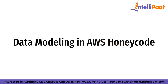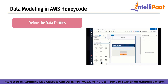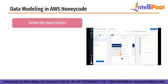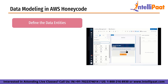Now we look at data modeling in AWS Honeycode. Data modeling is a critical aspect of building an application in Honeycode. A data model is a visual representation of how data is organized and how it relates to each other. The data model defines the structure of the app's data including tables, columns and relationships. The first step in data modeling is to define the data entities that the app will use — the objects the app will work with, such as customers, products or employees. Each entity should have a unique name and should be described in terms of its attributes.